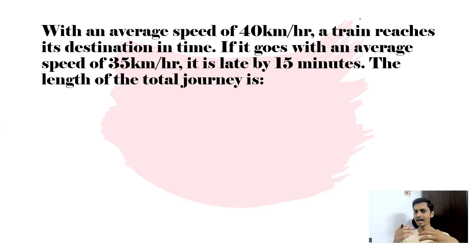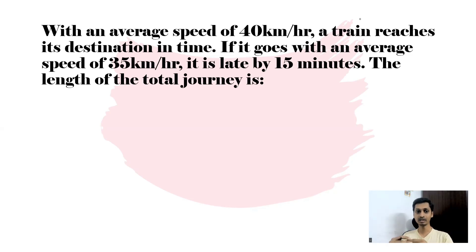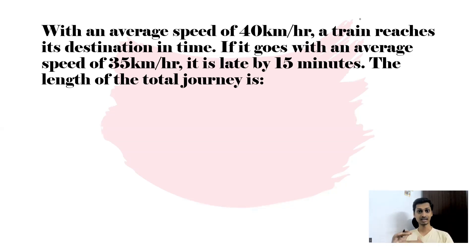The question: with an average speed of 40 kilometers per hour, a train reaches its destination in time. If it goes with an average speed of 35 kilometers per hour, it is late by 15 minutes. Find the total length of the journey. You can pause and read it once more. You can expect this kind of question in competitive exams and campus interviews.